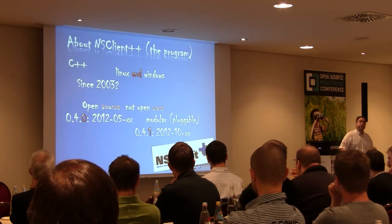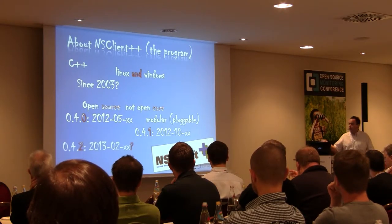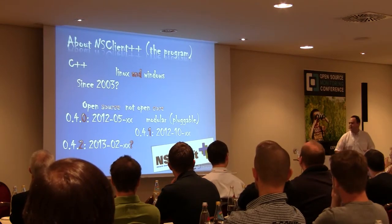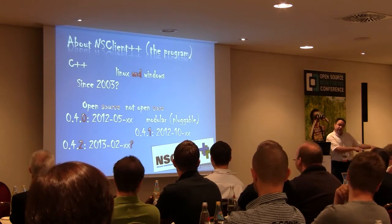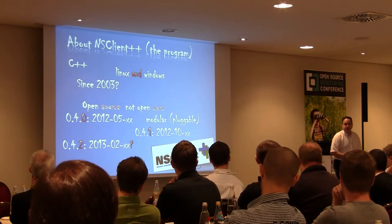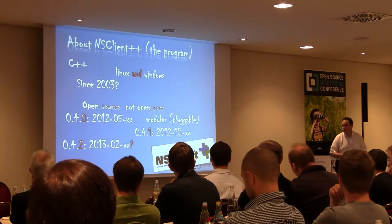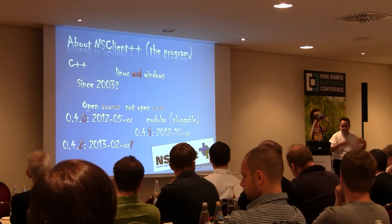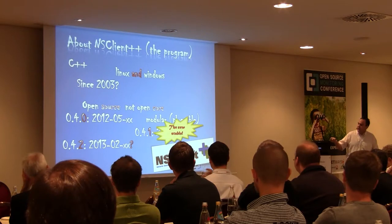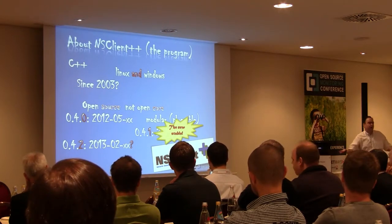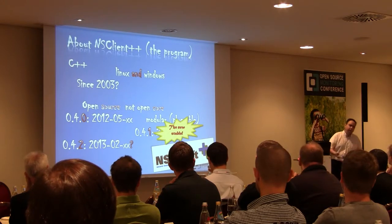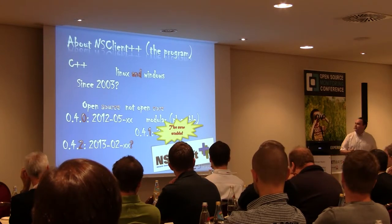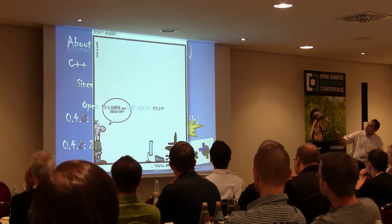The difference between 0.4.0 and 0.4.1 is essentially bug fixes and new features, so everything should work the same. Version 0.4.2 will be out early next year — and I'll admit that might not actually be February. It will have some changes, so you might need to do configuration conversion. But 0.4.0 to 0.4.1 should be just an update. Also, 0.4.1 will be the new stable, which means I'll stop supporting 0.3.9.